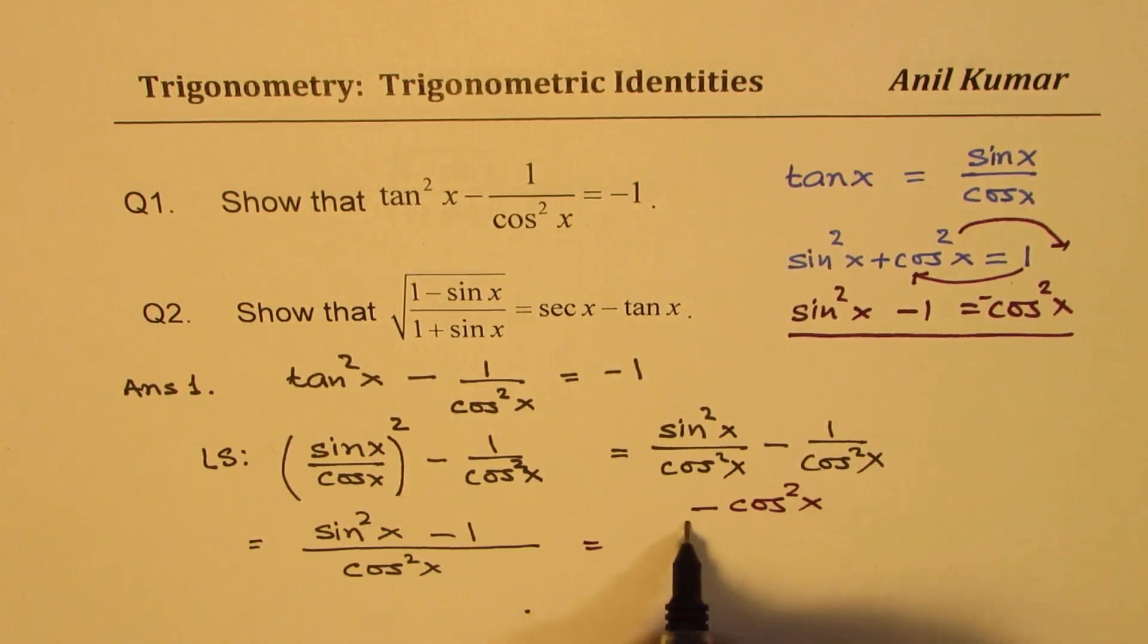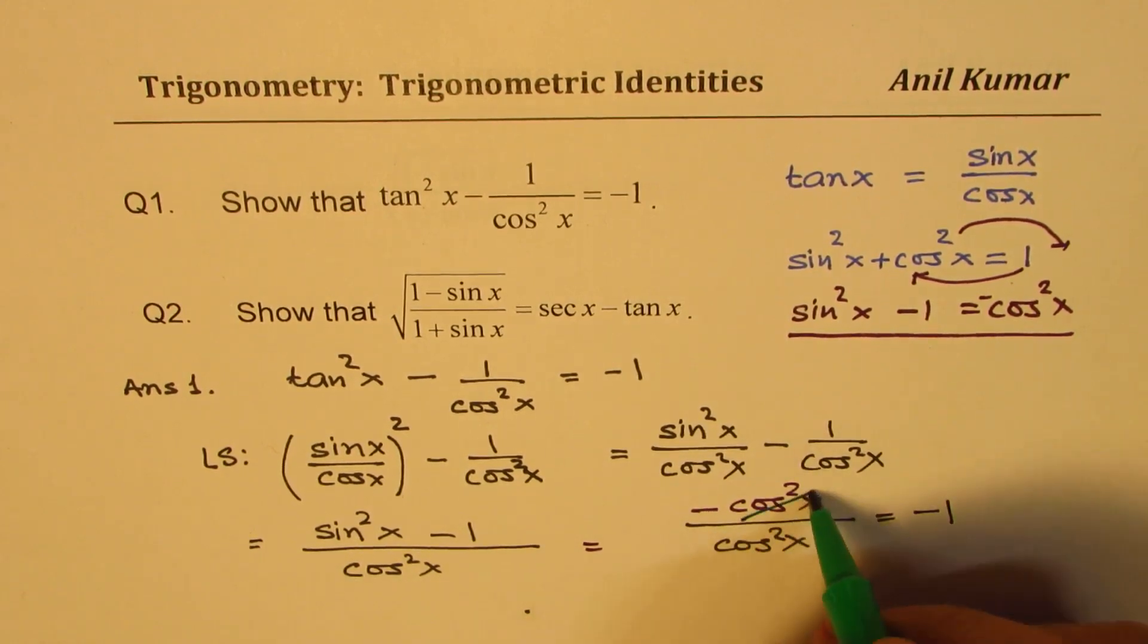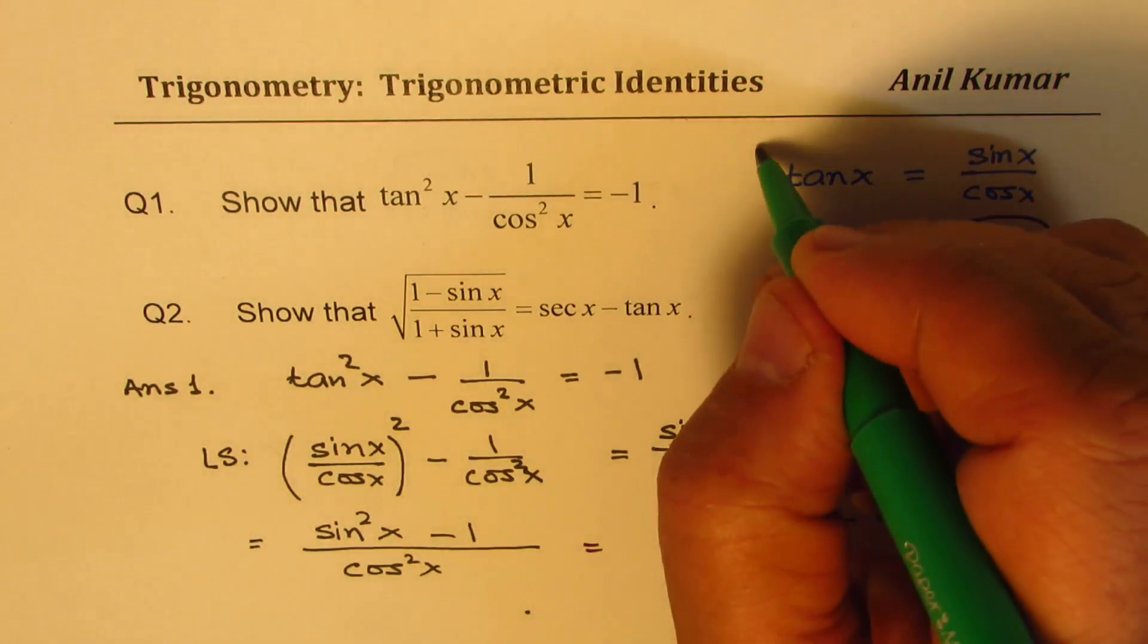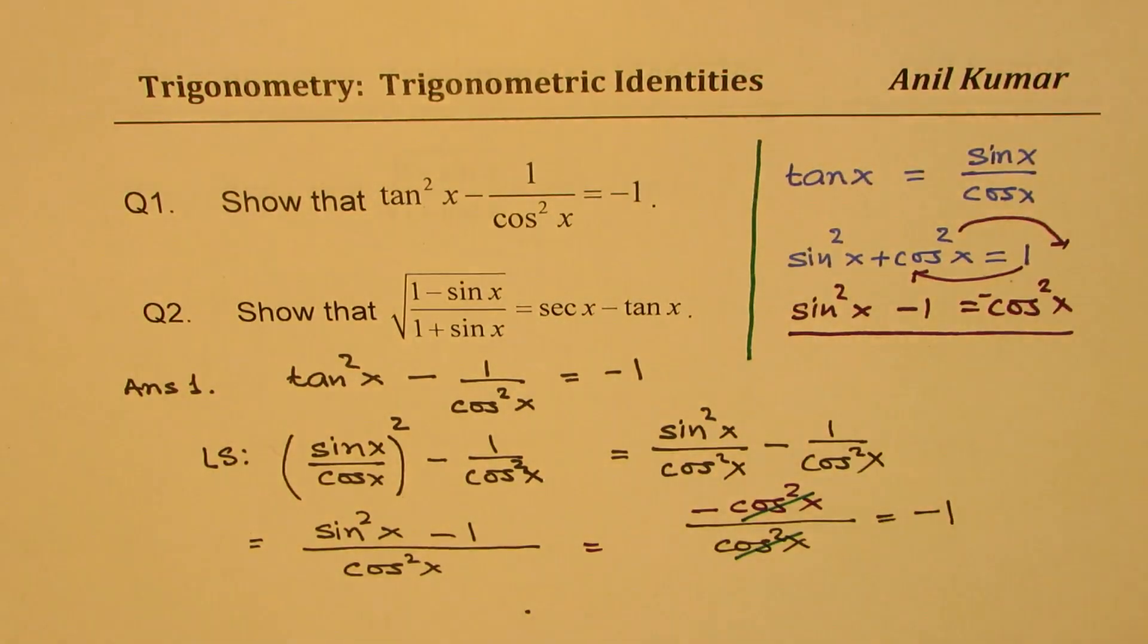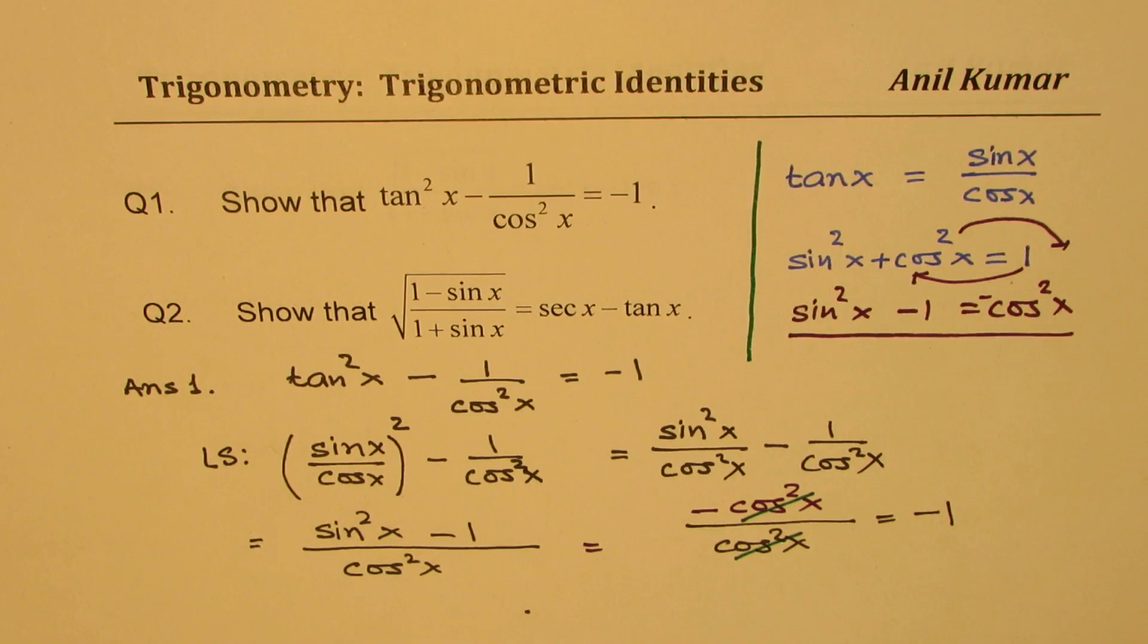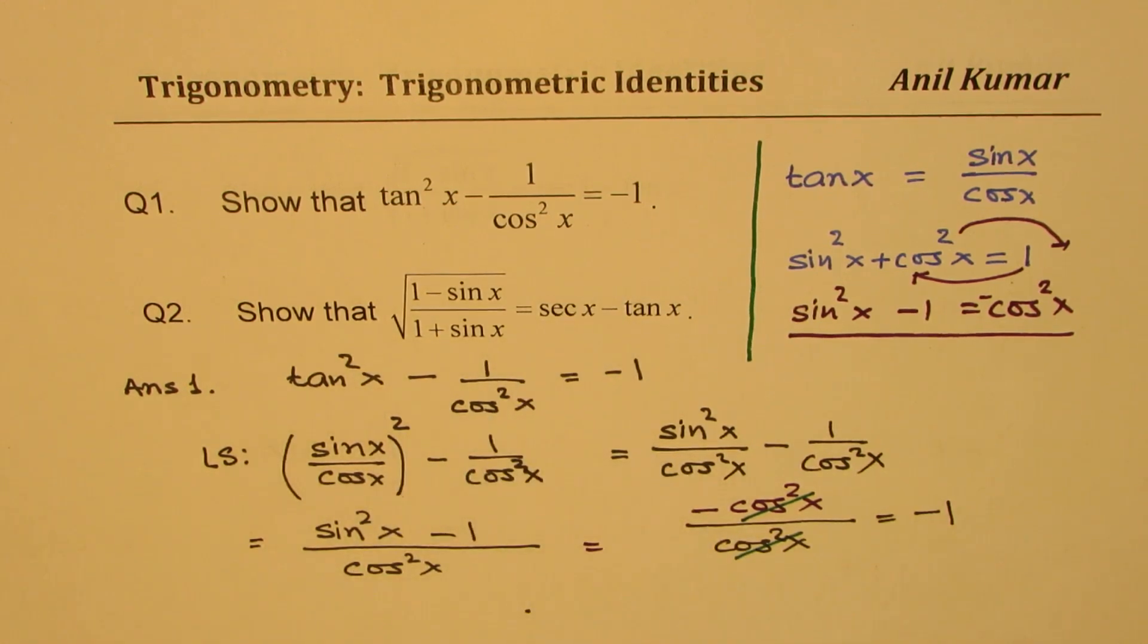The denominator here is cos²x. Now, cosx, cosx cancel and we're left with -1. Do you see that part? So that is how we can actually prove this particular identity. Now, the question provided to me had plus 1 here. So that was an error and probably that is why the student needs help. The question was incorrect. I wrote minus 1 and solved.